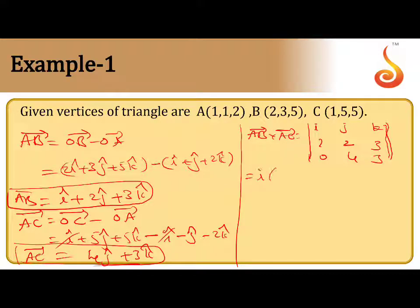So, now we can find out i into 6 minus 12. Minus j into, same concept like what we are doing different determinant, follow same thing. So, j into, this is 1. Sorry. So, 3 minus 0. Plus k into 4 minus 0. This is minus 6i, minus 3j, plus 4k. So, this is the AB bar cross AC bar.